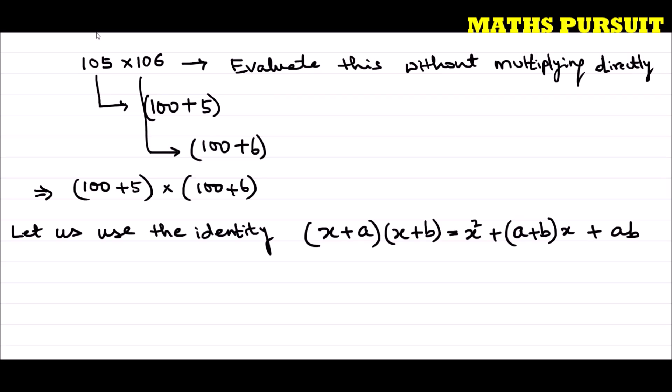Here, if you consider, 100 is our x, 5 is our a, and 6 is our b. Keeping this in mind, let us utilize this identity.